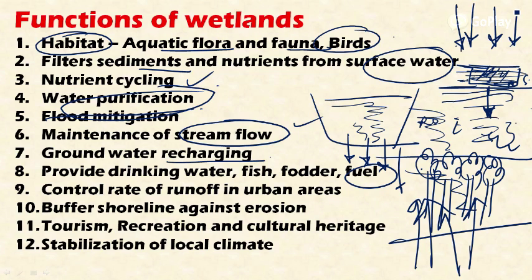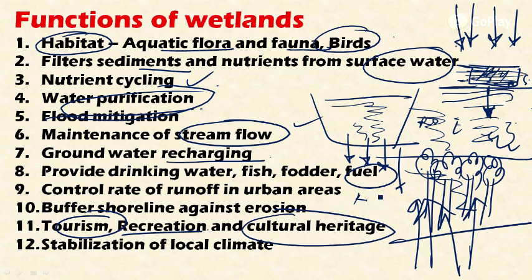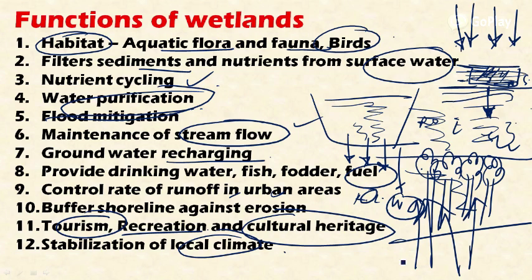Wetlands have important functions including tourism development and recreation, and act as cultural heritage — for example, Chilika Lake, Koleru Lake, and Wular Lake are important tourist attractions. They also stabilize the local climate because the large water body moderates environmental fluctuations and provides a stable climate to adjacent areas.